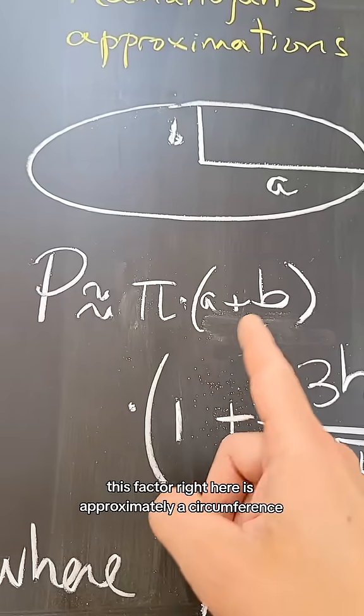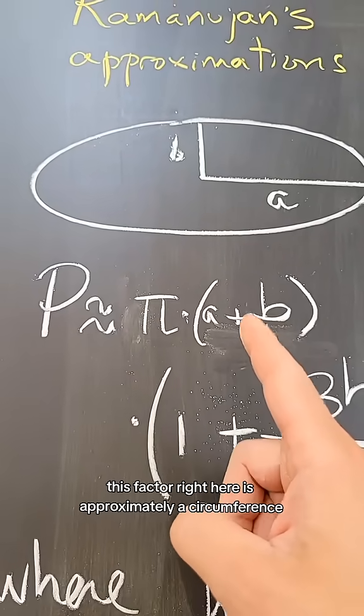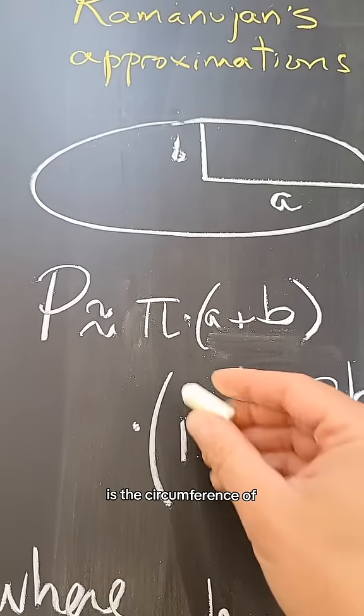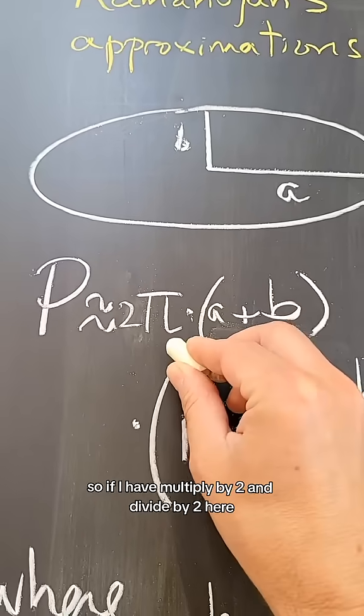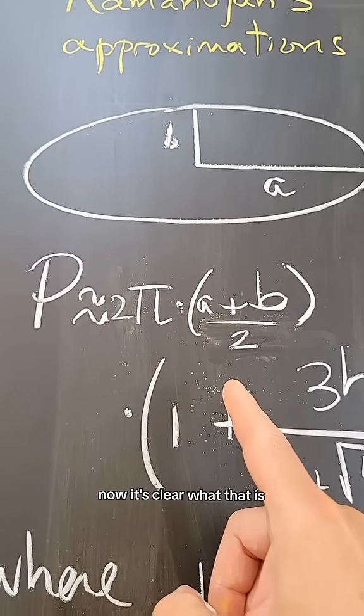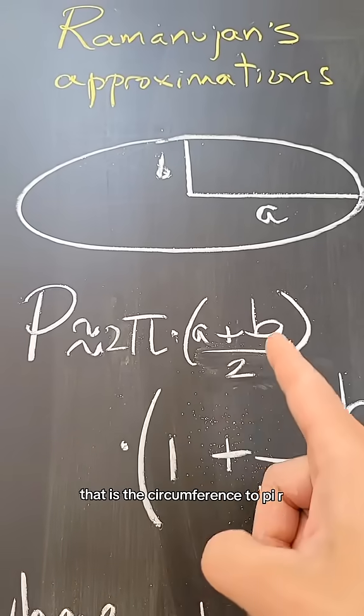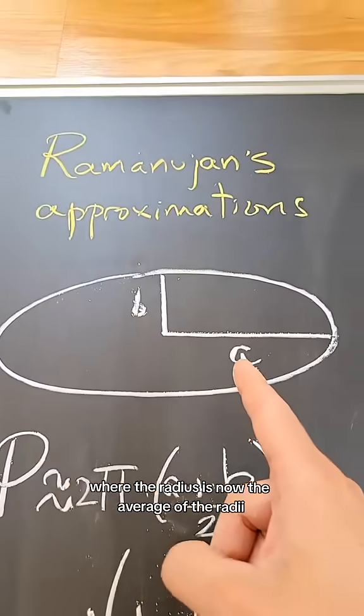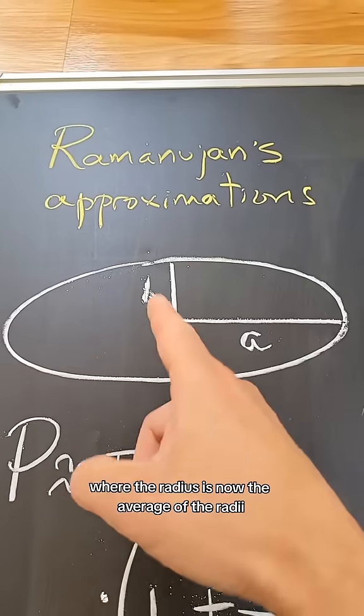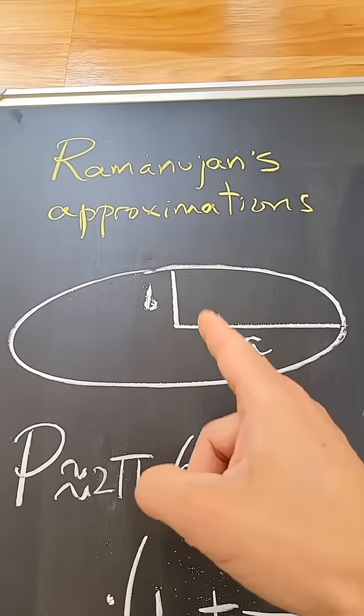This factor right here is approximately a circumference. If I multiply by 2 and divide by 2 here, now it's clear what that is. That is the circumference, 2πR, where the radius is the average of the radii of this ellipse.